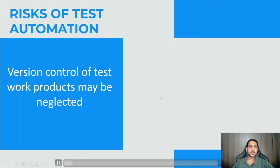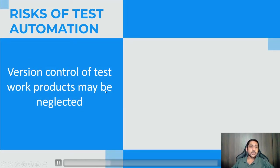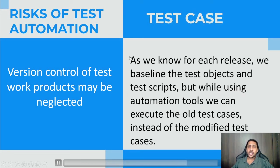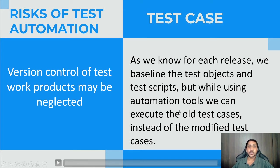Version control of test work products may be neglected. For each release we baseline the test objects and test scripts, but while using the automation tool we can accidentally execute old test cases instead of the modified ones. The tool does not know which version to load and run, so if you don't maintain version control properly, you may run old test cases or lose the history of your test scripts.